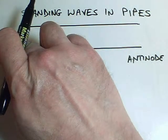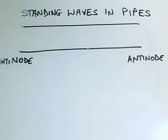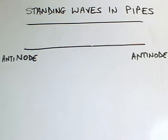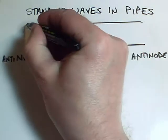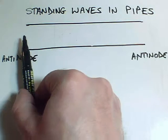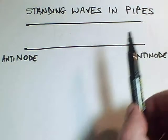So if I open that end of the pipe again, then this would become an anti-node. And let's start talking about pipes that are open at both ends because they're quite easy to talk about. So this is an anti-node. So the air at this end is going to have maximum amplitude of oscillations, and same here.